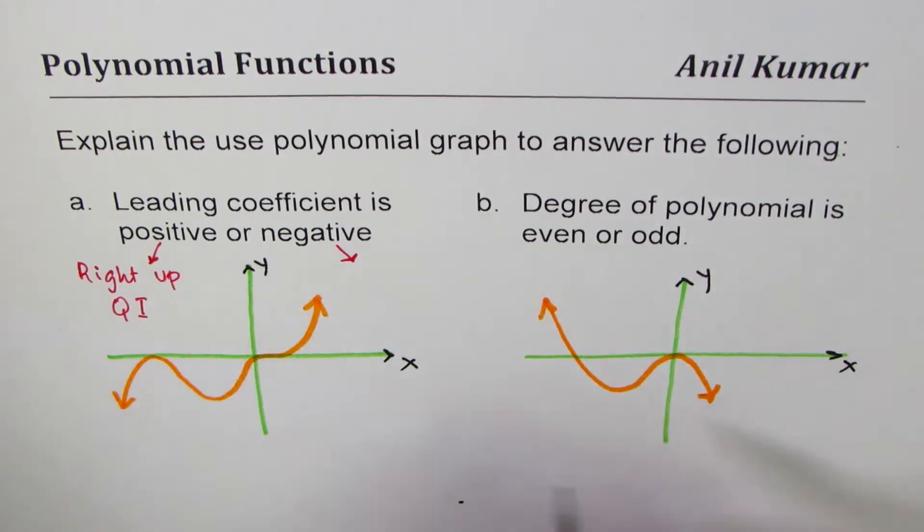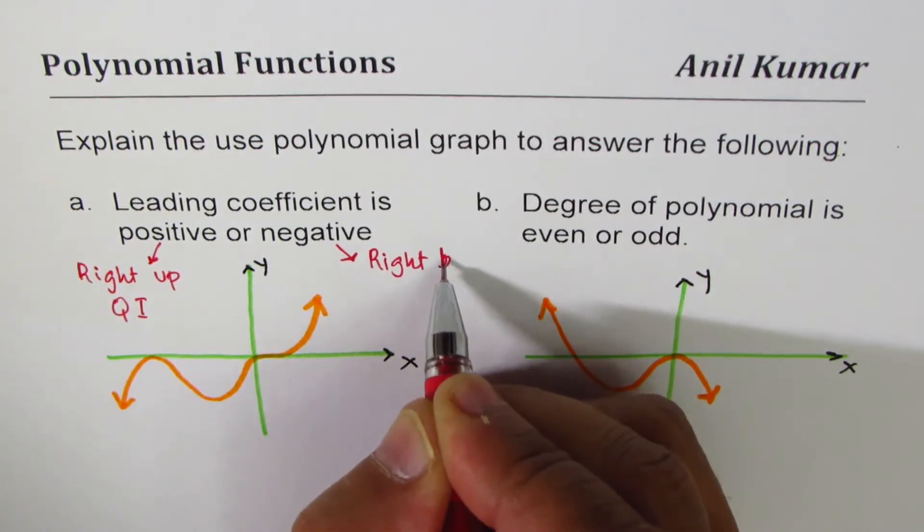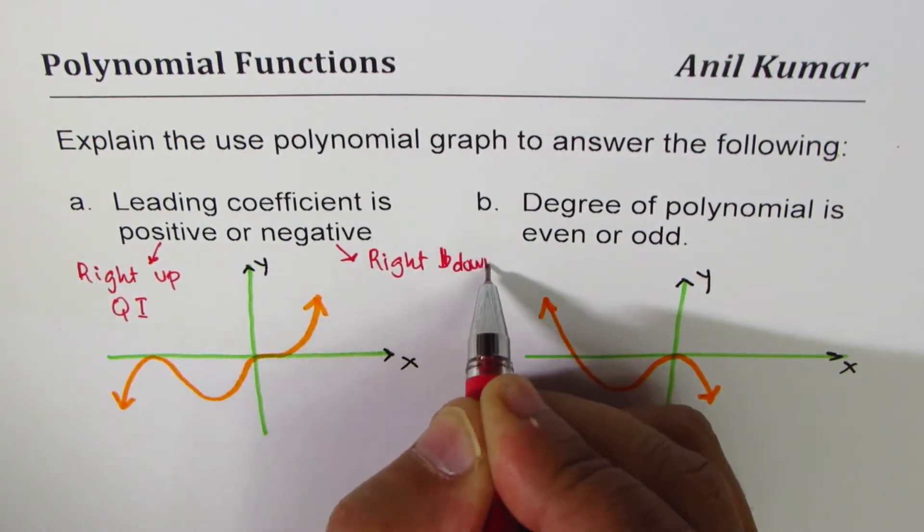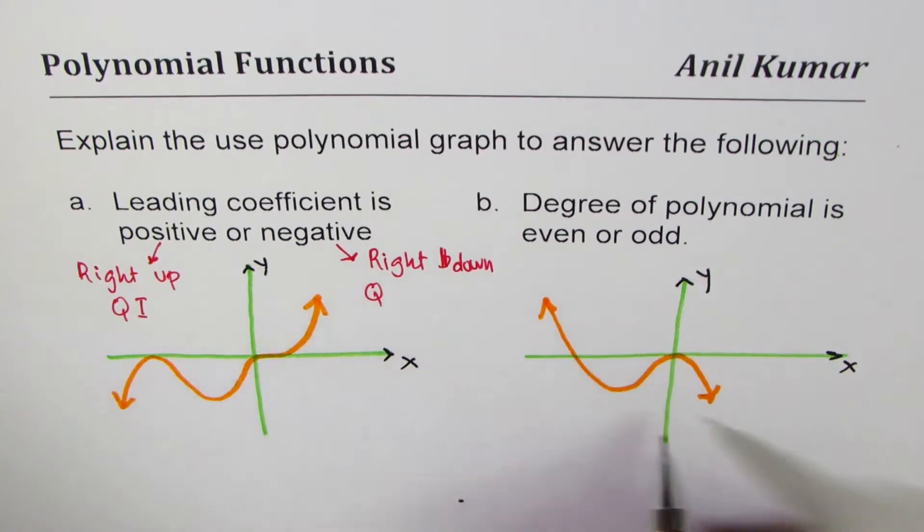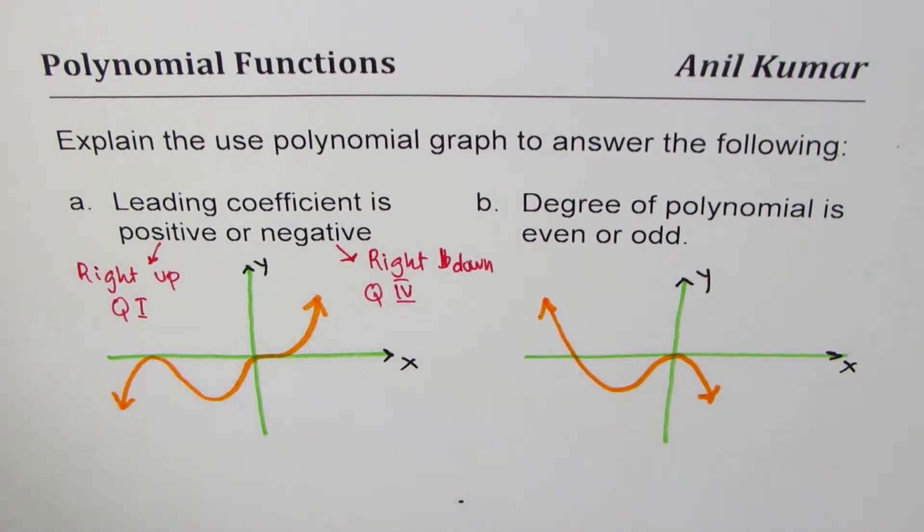And if the leading coefficient is negative, the right side is down like shown here. We can write this as right down, or we can say it ends in quadrant four. So that is how you could figure out about the leading coefficient.